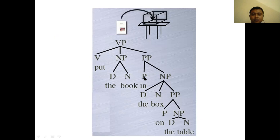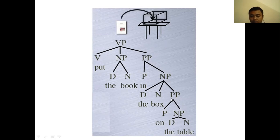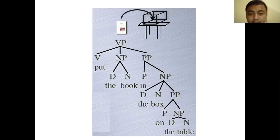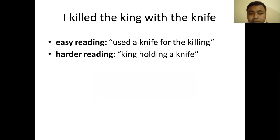So: 'in the box on the table' is one unity as a prepositional phrase — a PP. It comes from: determiner and noun forming a noun phrase, then 'on' plus the table forms a PP, then noun phrase plus PP forms another noun phrase, and that noun phrase plus PP forms the full PP. This becomes one phrase: 'put the book in the box on the table.' Notice the visual difference: in interpretation one, 'the book in the box' is one NP unit and 'on the table' is separate, attached higher. In interpretation two, 'in the box on the table' is one PP unit.